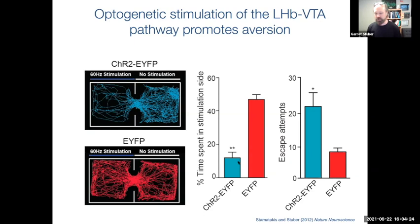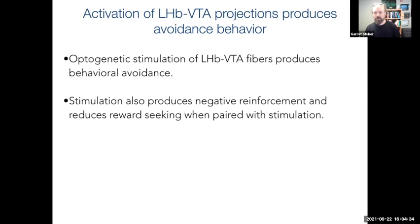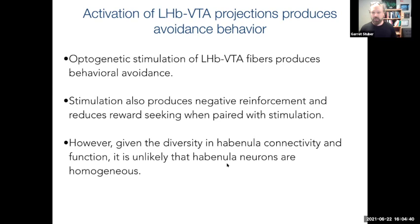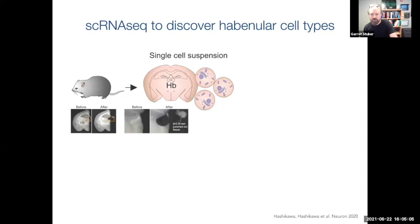These studies were some of the first to show the functional relevance of connectivity between the habenula and VTA, but they opened up a lot of questions: what are the different cell types in this region, and can we identify different types of habenula cells and look more at their molecular diversity in detail? In that first study, we were non-specifically targeting all habenula neurons and didn't have a good way to look at molecularly defined cell types. A few years ago, we were able to start looking at this in more detail.